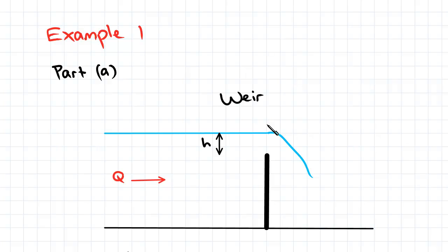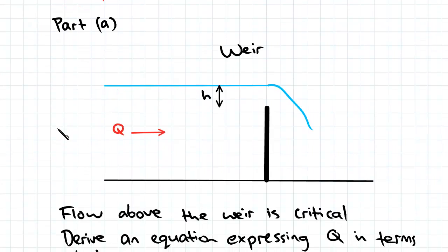In the weir example, the flow depth over the weir is actually indicative of the flow rate. So this method of measuring flow rates is actually used commonly in practice.